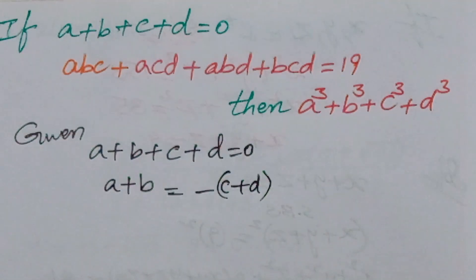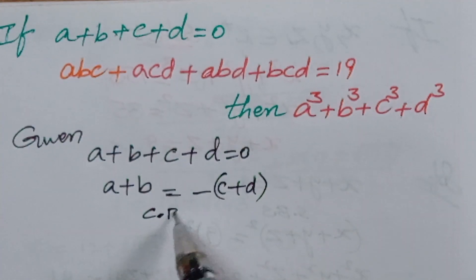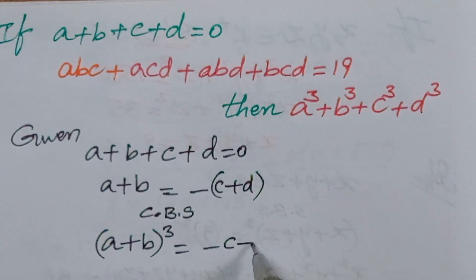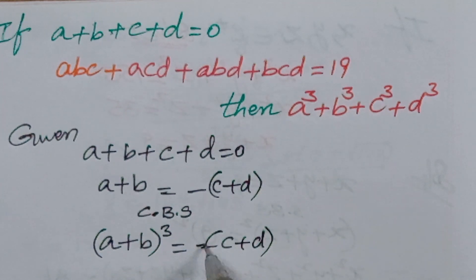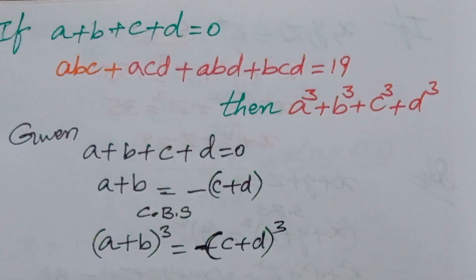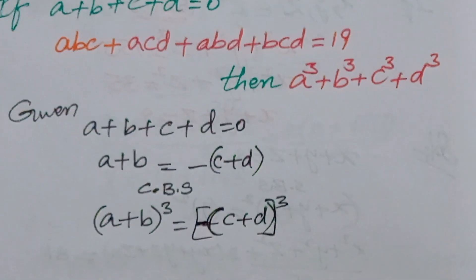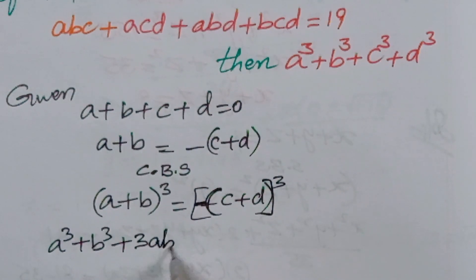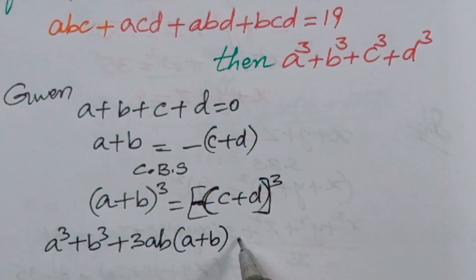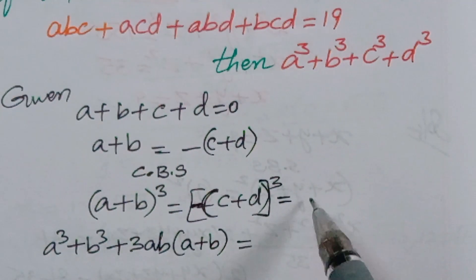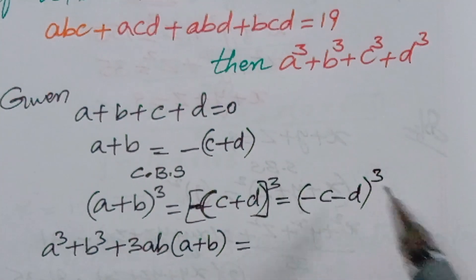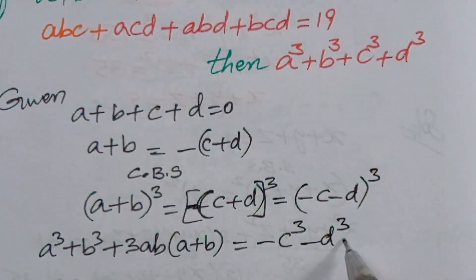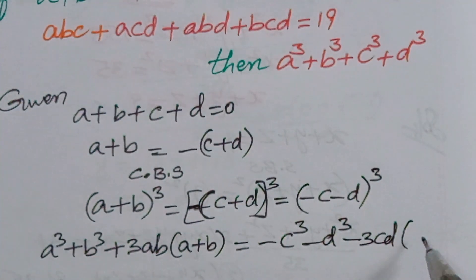He is asking to find the cube, so I am doing cubing on both sides. This you can do in two models. (a + b)³ = −(c + d)³. We know (a + b)³ = a³ + b³ + 3ab(a + b). In the same way, the right side gives −c³ − d³ − 3cd(c + d).